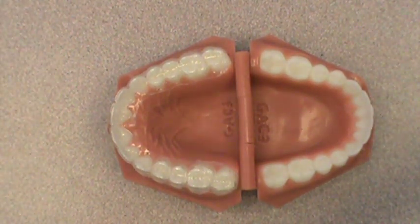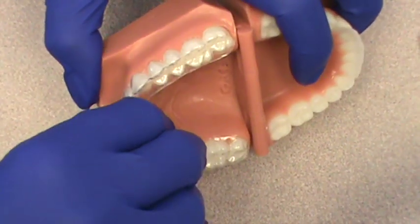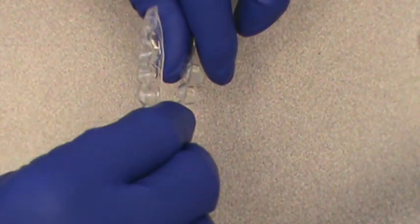The other type of retainer that's also very popular is called the Essex type of retainer, and these are clear retainers. They require some special care because they're fairly thin plastic.